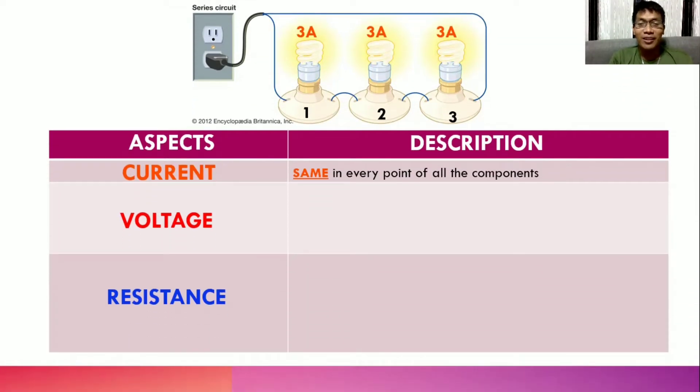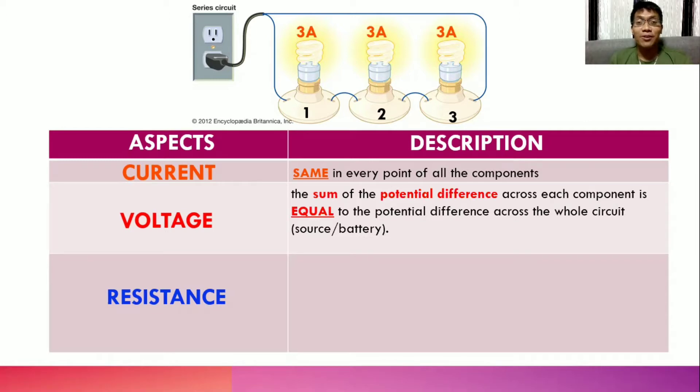How about the voltage? Take note, in our previous teach vlog, we also learned that the voltage is the same as potential difference. We described the voltage of a series circuit as the sum of the potential difference across each component is equal to the potential difference across the whole circuit. So it could be the source or the battery. In this illustration, we got a source or the socket.